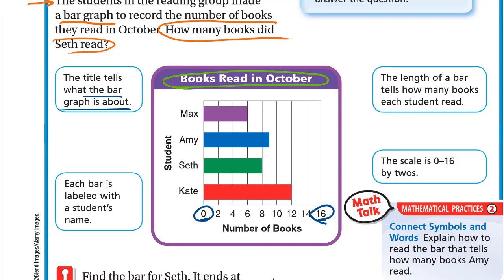Each bar is labeled with the student's name, so here we have the names Max, Amy, Seth, and Kate. The length of a bar tells how many books each student read.